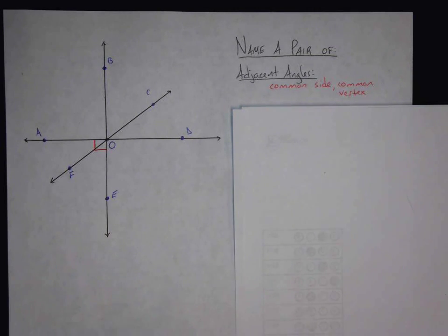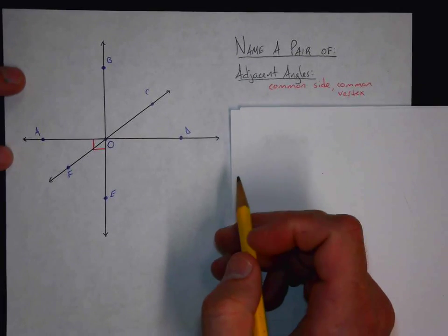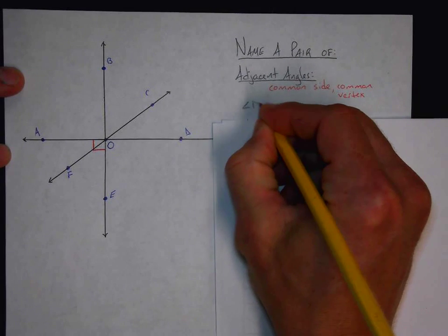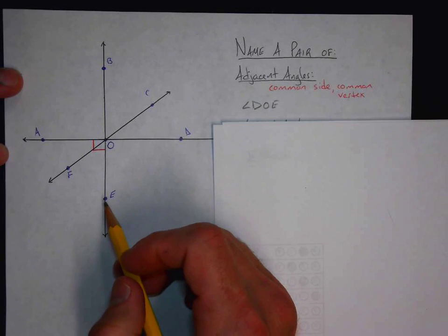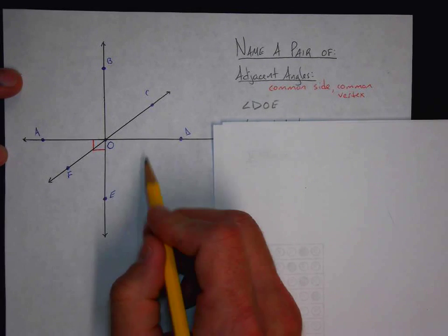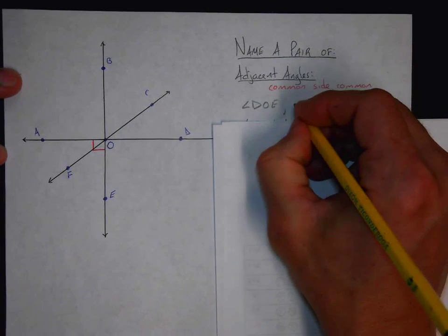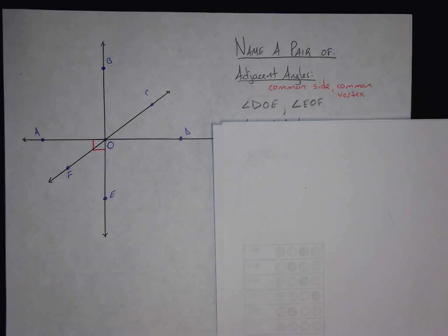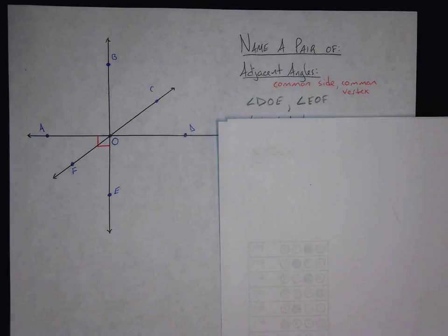So we can pick any two — it really doesn't matter. So if I'm saying name a pair, I'll focus on the first two that I said. So if I start with angle DOE, what angle is adjacent with that? Well, it's either this one here or this one here. I'm going to go with the one down here, because I'm reading it DOE, which means I'm reading it kind of clockwise. So I'll say adjacent to that is angle EOF. Those two are adjacent angles. They have a common vertex and a common side. So we have to make sure we know that vocabulary, so when we see the word adjacent angles, you know exactly what we're talking about.